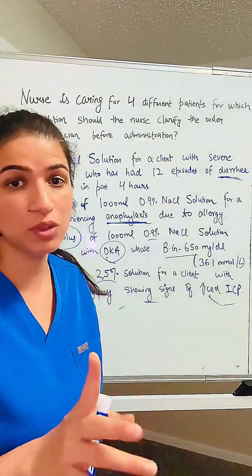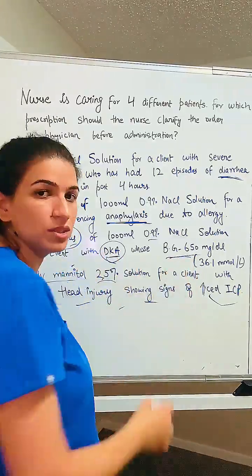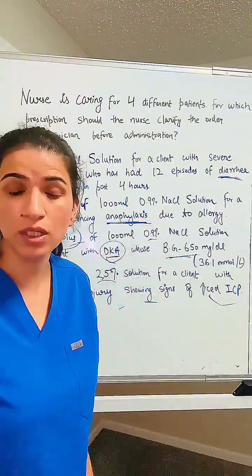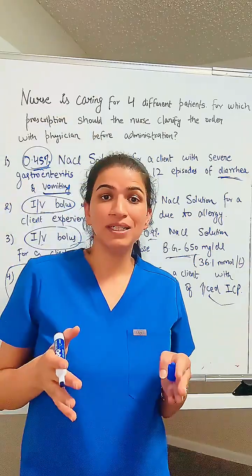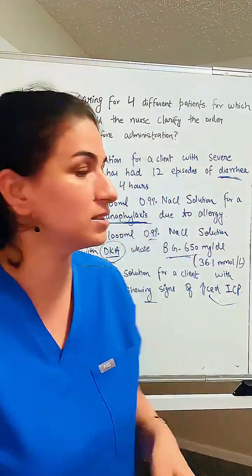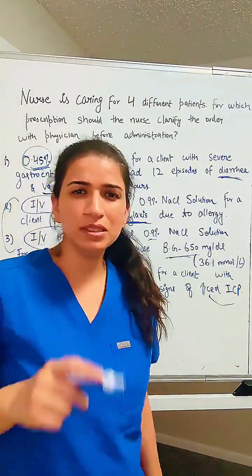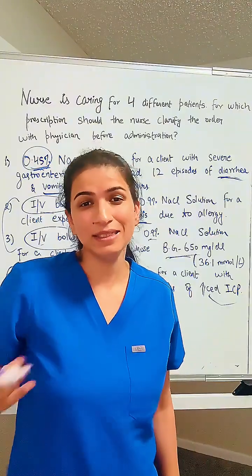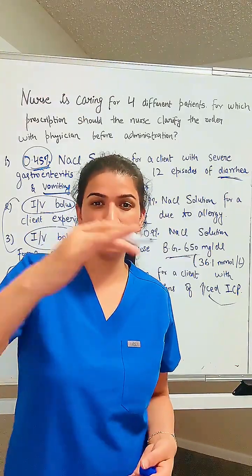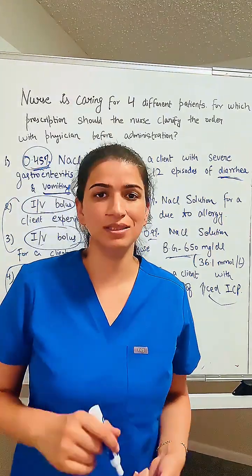If you have good knowledge, always use it first — don't rely on strategy. For DKA with high sugar, it's an emergency and isotonic solution is safe for any patient because it matches the body's concentration. For anaphylaxis, it's clearly an emergency and an IV bolus is appropriate. This narrows it down: ask yourself whether a vomiting and diarrhea patient needs a higher, lower, or isotonic solution — that clue leads you to option one as the wrong order.